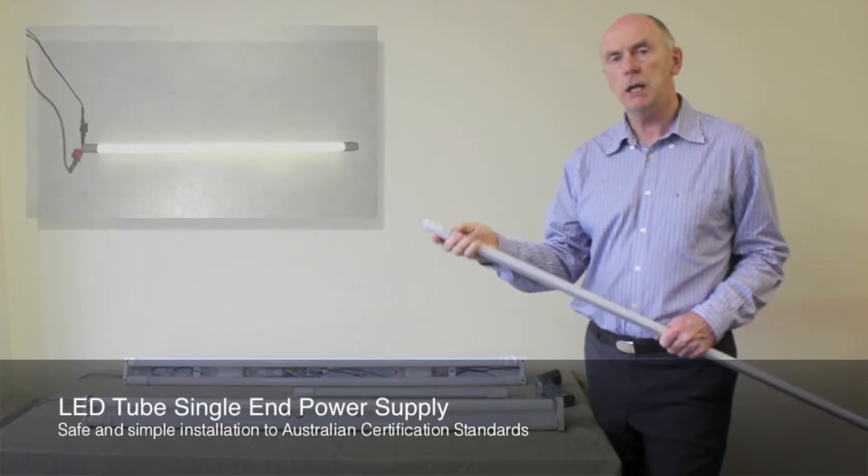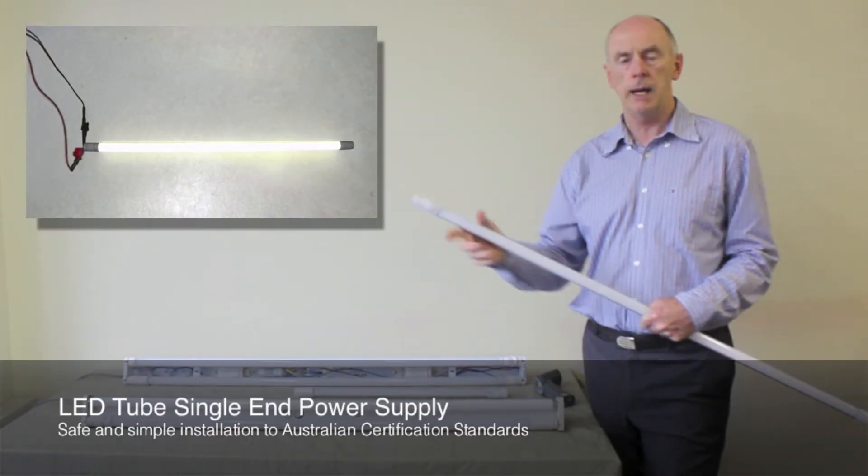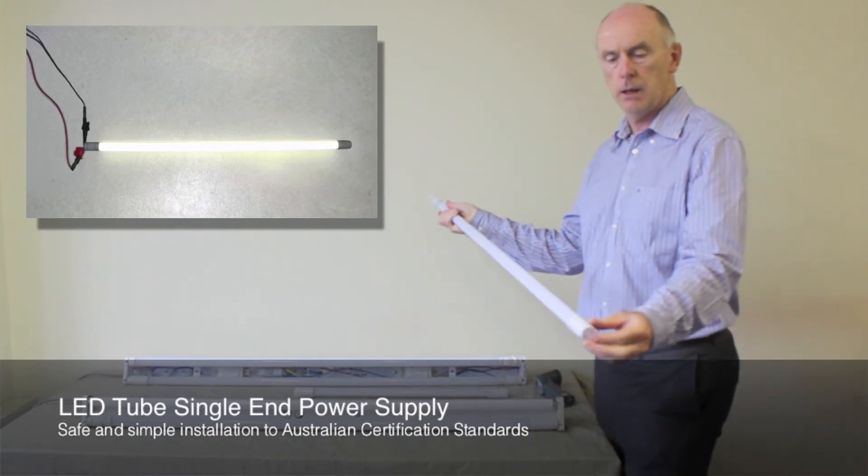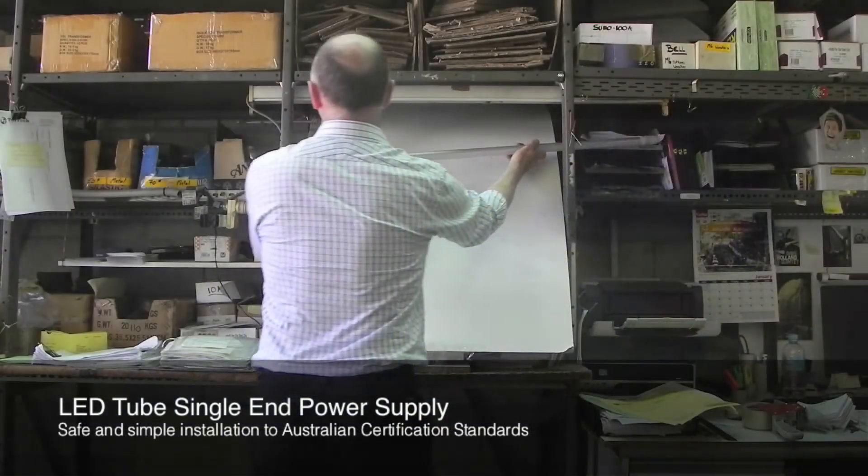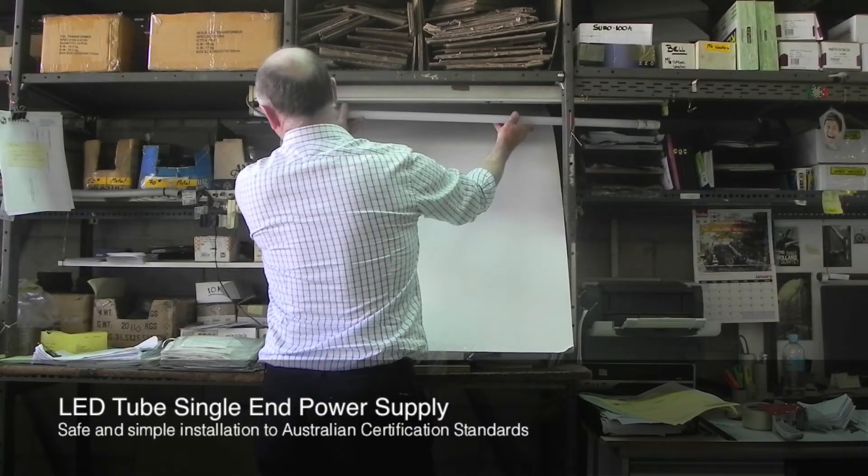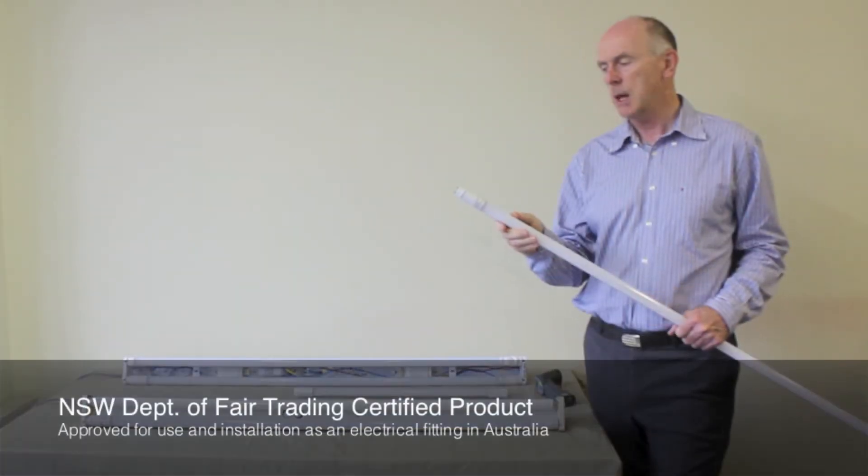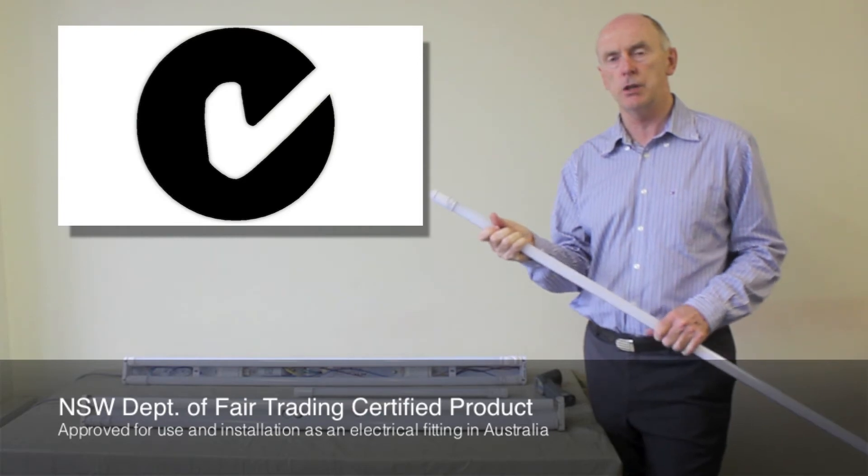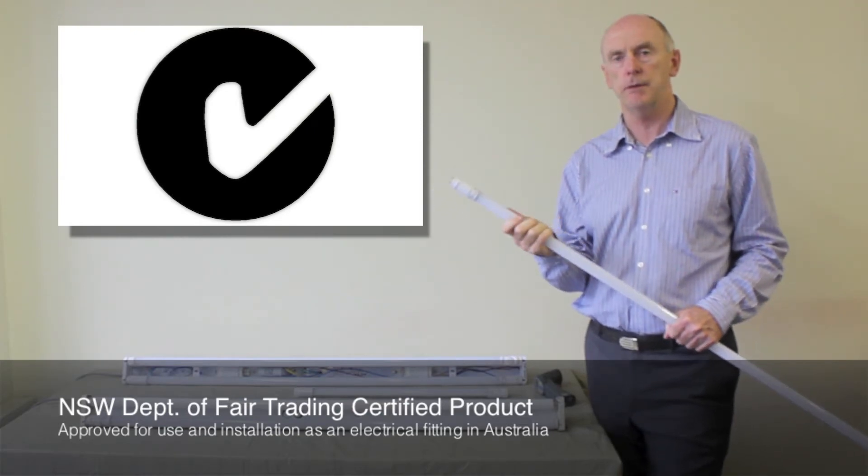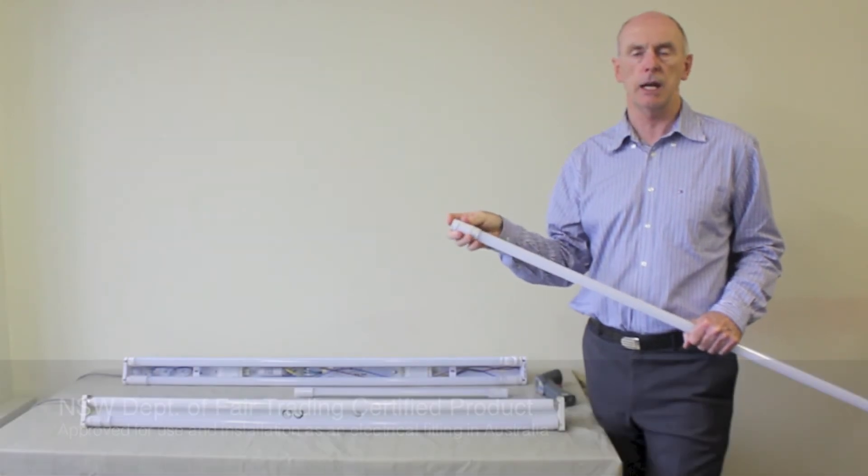These particular tubes are single-ended. In other words, the power is driven from only one end. The other end, there's no power. It's only for mechanical support. The reason for that is so you won't electrocute yourself during the installation process. These particular tubes have been tested and certified by the New South Wales Department of Fair Trading to prove that they are safe in any installation.